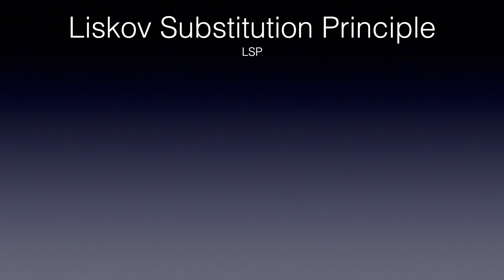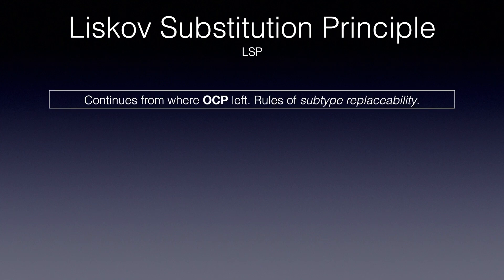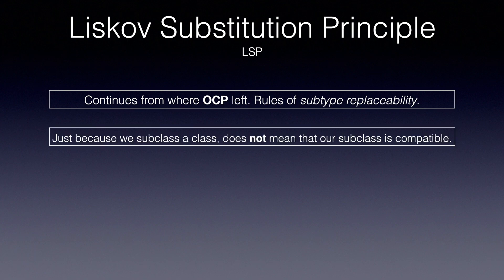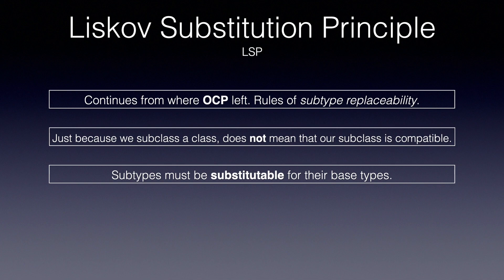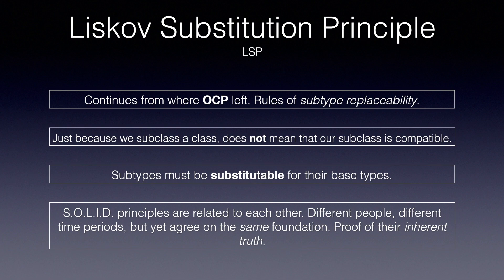The goal of the LSP is to continue from where the open-close principle left us, to give us rules of realizing abstractions. It is not enough to simply create those abstractions, but we need to know how to implement them, how to extend them. Barbara Liskov basically understood that extending a class does not automatically mean that the subclass is compatible with the application. And as Uncle Bob has said, subtypes must be substitutable for their base types. Take a moment to appreciate how all the principles basically complement each other — discovered at different times by different people, yet based on the same ideas and foundations, which is a great indicator that they have a very inherent truth inside them and stand the test of time.